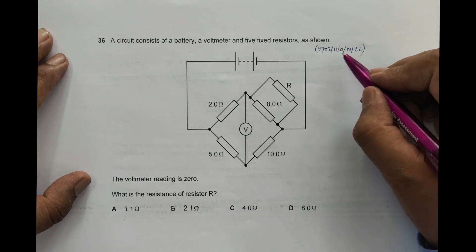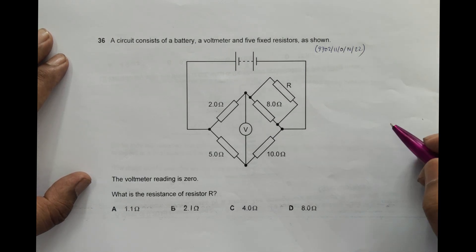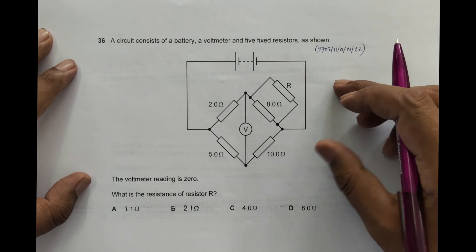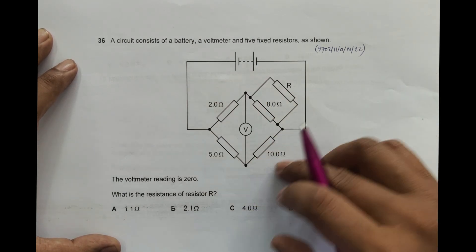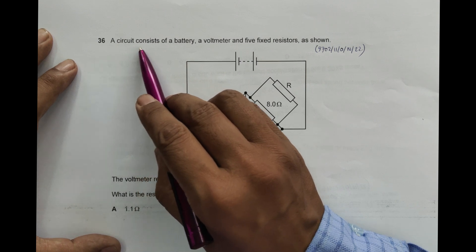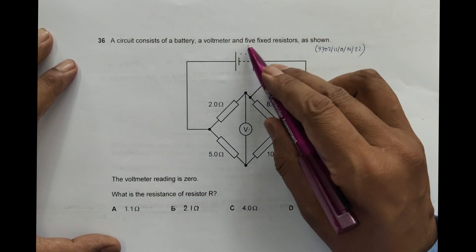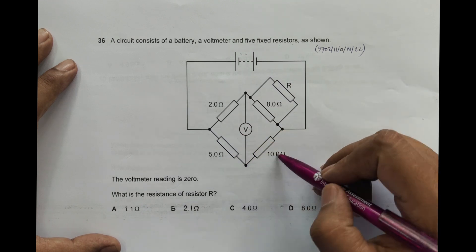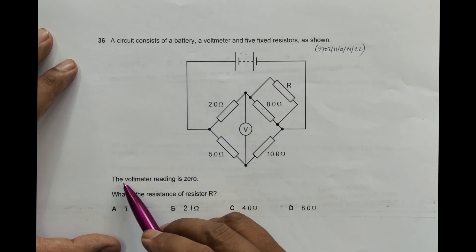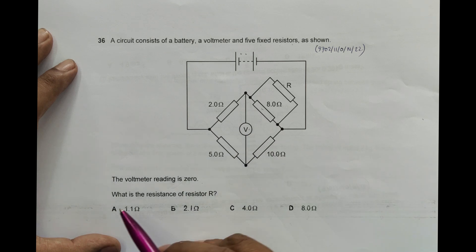Hello folks, this is 2022 October November paper 11 and the question number is 36. It is concerned with the chapter current electricity. As you can see the Wheatstone bridge here, a circuit consists of a battery, a voltmeter, and five fixed resistors as shown—one, two, three, four, five. The voltmeter reading is zero. What is the resistance of resistor R?